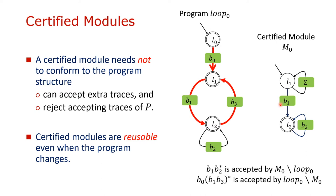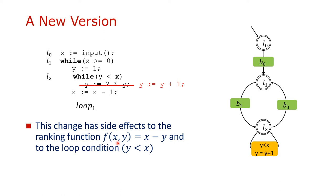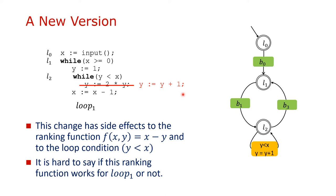Let's assume the program evolves into a new version. In this new version, only one statement is changed. Note that this change is non-trivial because it modifies variable y, which is used in the ranking function of the first certified module and is also used in the loop condition. As a result, this change has an effect on the loop behavior of these programs. The ranking function is the most important part for the termination analysis, and we would very much like to reuse the previously generated ranking functions. However, at this point we cannot decide if this ranking function works for the new program version or not.